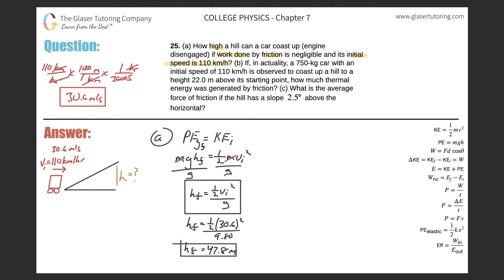Moving on to letter B: a 750 kg car with an initial speed of 110 km/h is observed to coast up a hill to a height of only 22 meters above its starting point. How much thermal energy was generated by friction? There's a discrepancy between the ideal 47.8 m and the actual 22 m, which is due to friction.